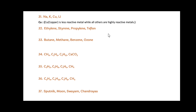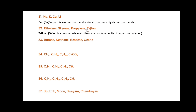Next: Ethylene, Styrene, Propylene and Teflon. In this, Teflon is the odd one out. Since Teflon is a polymer, while all others — Ethylene, Styrene and Propylene — are monomer units of their respective polymers.